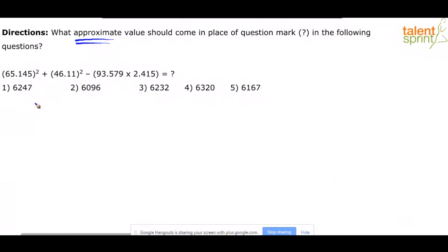Like for example, most of you would say the answer is 65 squared plus 46 squared minus something. So basically, 65.145 has been approximated to 65, so 0.145 has been neglected. Similarly, 46.11 has been approximated to 46, so 0.11 has been neglected.